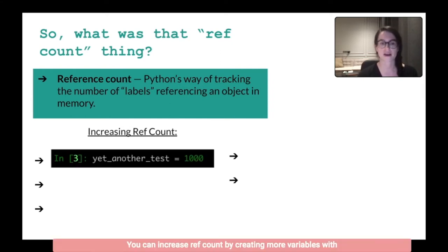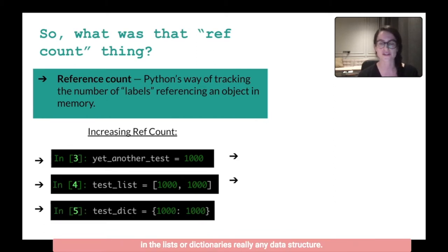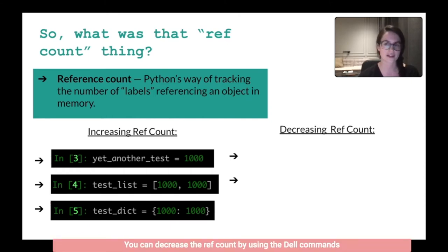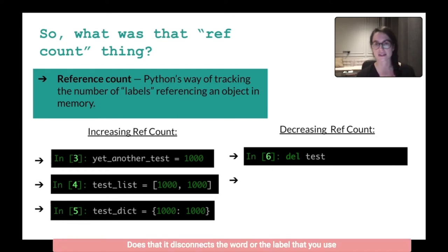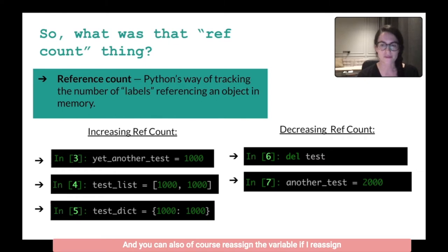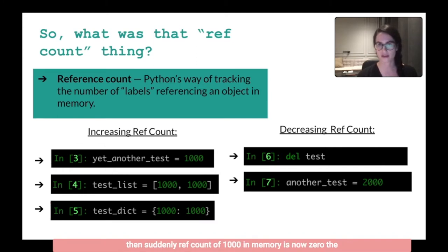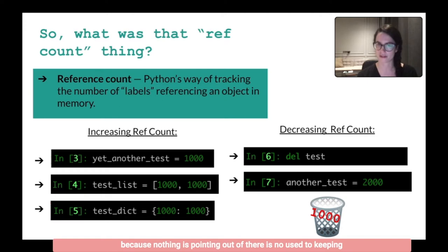You can increase ref count by creating more variables with that value, or by putting things in lists, dictionaries, or any data structure. You can decrease the ref count by using the del command, which disconnects the label from the value — so the value still exists in your private heap, but the variable no longer points to it. You can also reassign a variable. If I reassign 'another_test' to 2000 instead of 1000, then 1000 has one fewer reference. If you decrement until the ref count of 1000 in memory is zero, the Python memory manager immediately deletes it from memory, because if nothing's pointing at it, there's no use keeping it around.